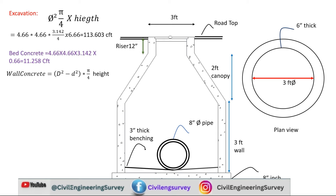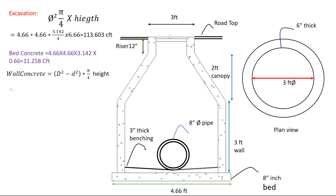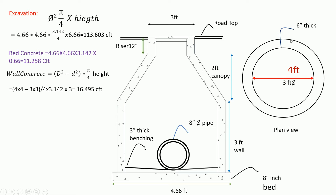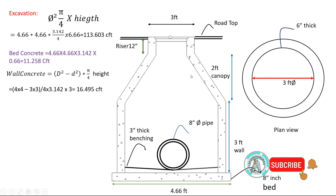We put the values: 3 feet 6 inches including one side, adding 12 inches we add with the 3 feet, giving 4. Inner diameter is 3. So: (4² minus 3²) multiplied by pi divided by 4, then multiply by 3.142, giving 16.495 cubic feet. This concrete is 1 to 4 ratio.